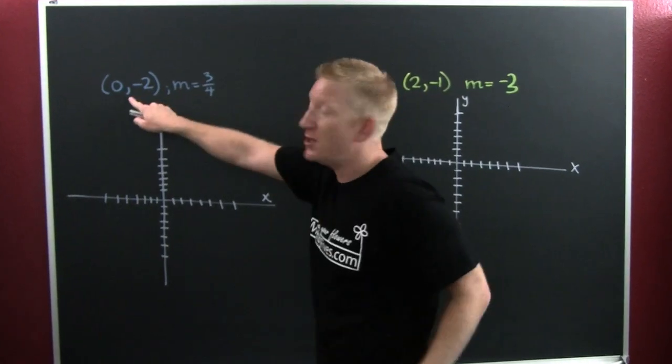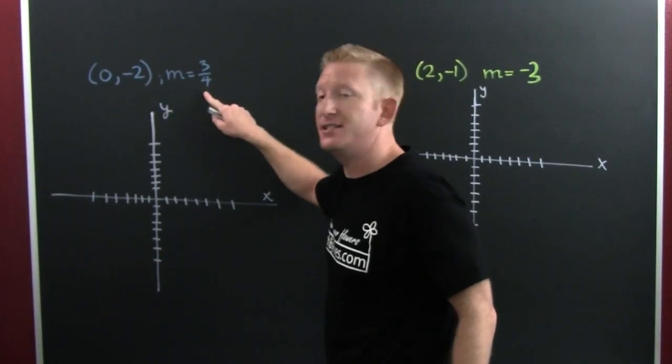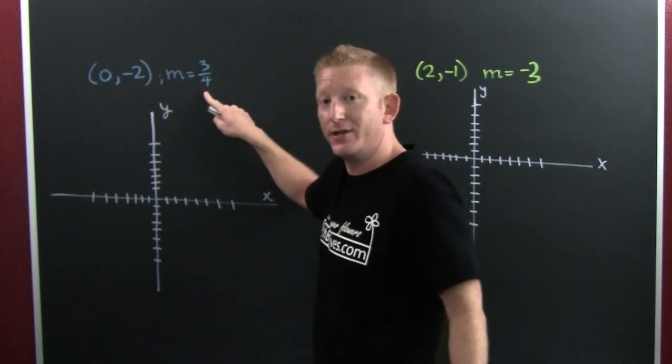My first example, they give me a y-intercept and a slope. This is just how you do the cheap and easy magic way of graphing the point-slope form.